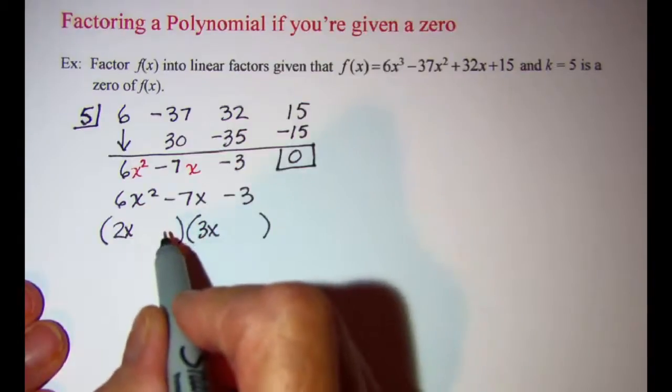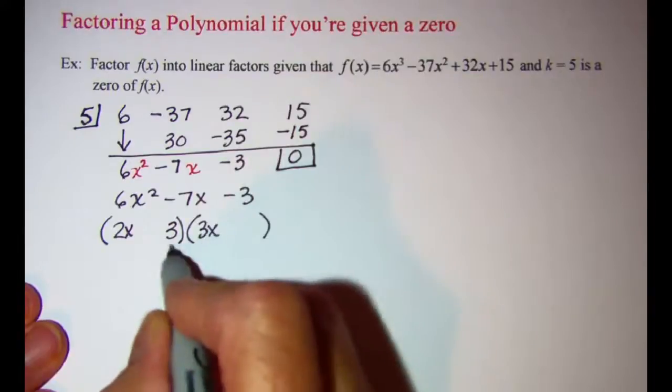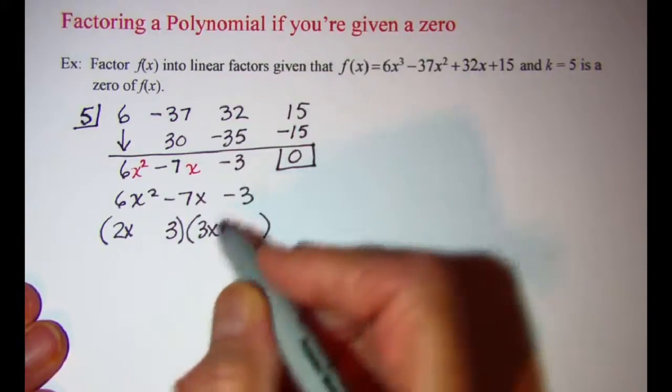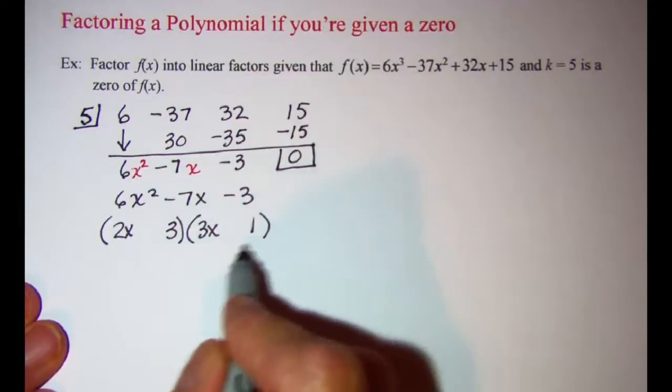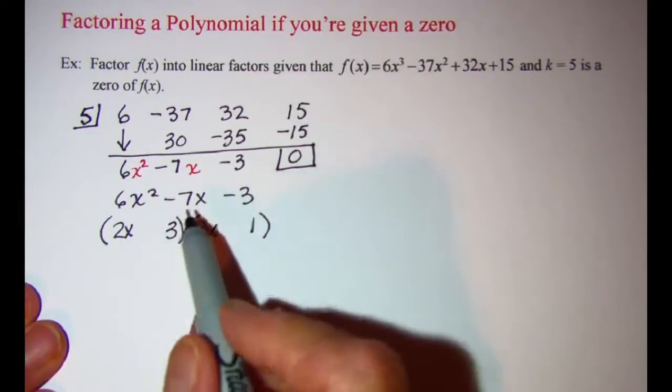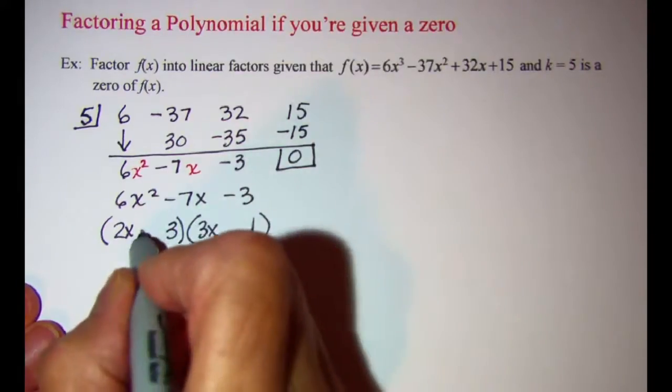I'm going to pair up my three so that I have a 9x when I multiply my inners together, and I'll have a 2x for my outer product. Since I need a negative 7x, my 9x needs to be negative.